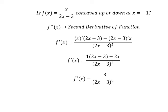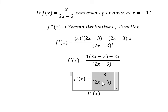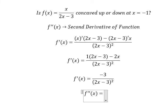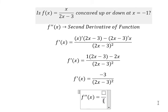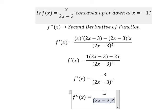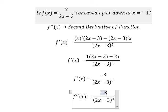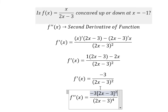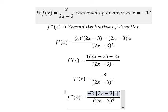Next we need to find the second derivative of the function. We will use the answer from the first derivative here. The denominator becomes (2s minus 3) to the power of 4, because power 2 times power 2 gives power 4. We have negative 3 and (2s minus 3) to the power of 2, and we take the first derivative of (2s minus 3).